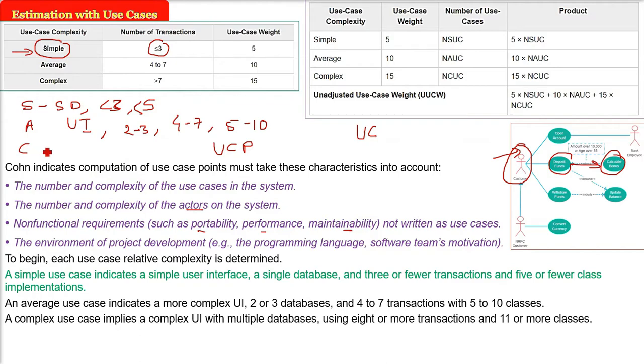When your use case is complex, you have a complex user interface, multiple databases, eight or more transactions, and 11 or more classes. You will categorize your use case into simple, average, and complex.